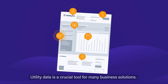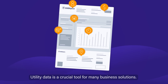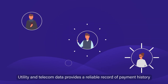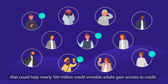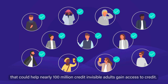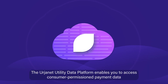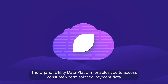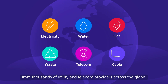Utility data is a crucial tool for many business solutions. Utility and telecom data provides a reliable record of payment history that can help nearly 100 million credit-invisible adults gain access to credit. The Urjanet Utility Data Platform enables you to access consumer-permissioned payment data from thousands of utility and telecom providers across the globe.